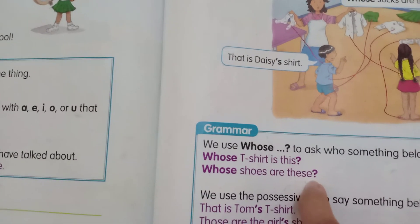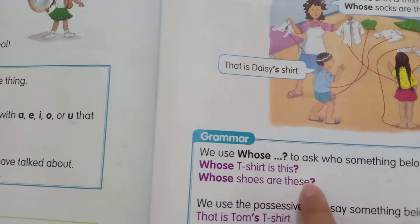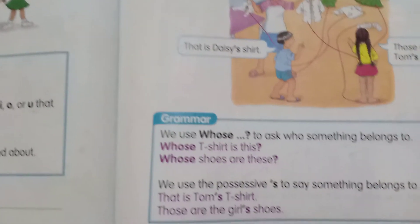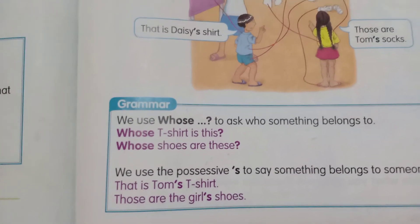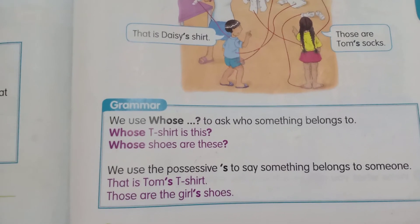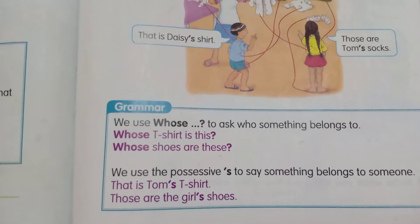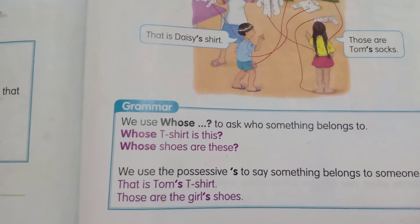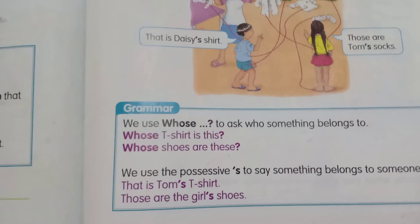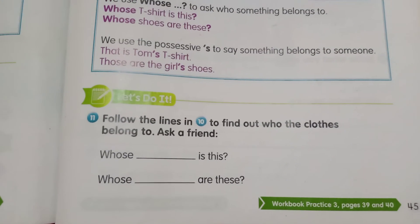If it is just singular, we use 'this'. And for the plural, we use 'these'. And then we use the possessive to say something belongs to someone — that is Tom's t-shirt, or those are the girl's shoes.